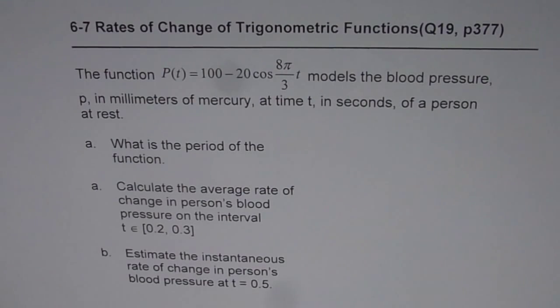What is the period of the function? Calculate the average rate of change in person's blood pressure on the interval 0.2 to 0.3 and estimate instantaneous rate of change in person's blood pressure at t equals 0.5.